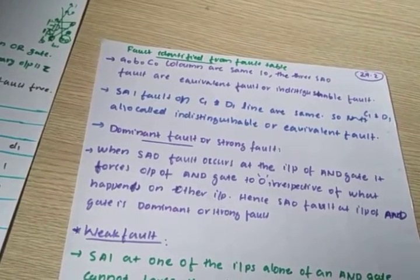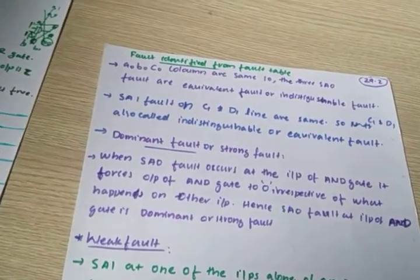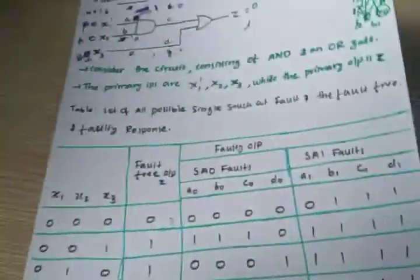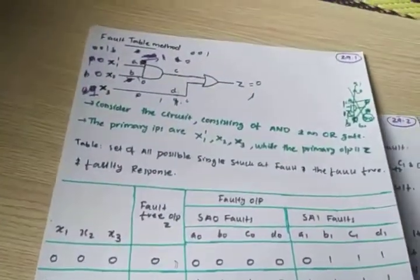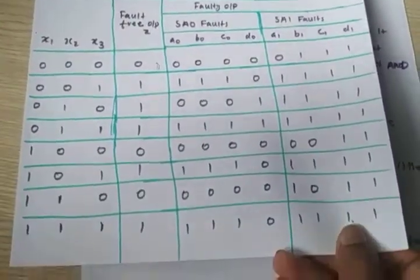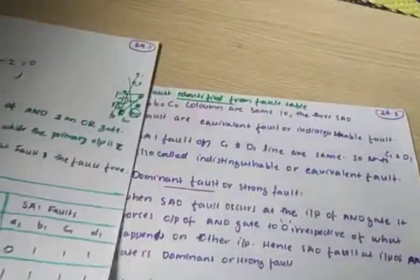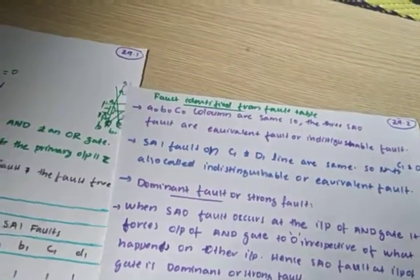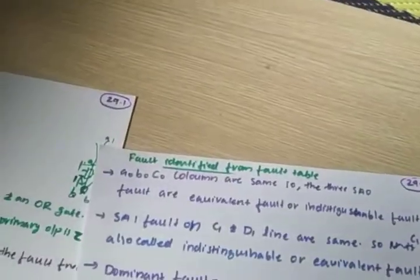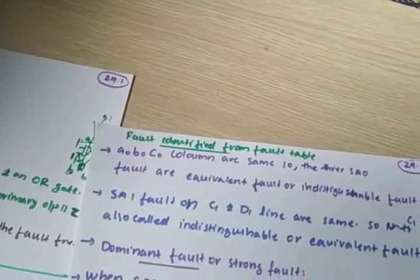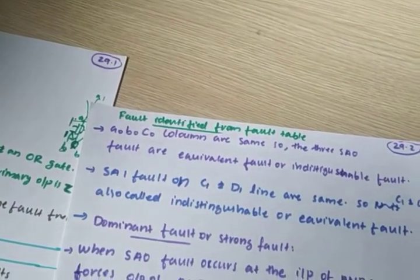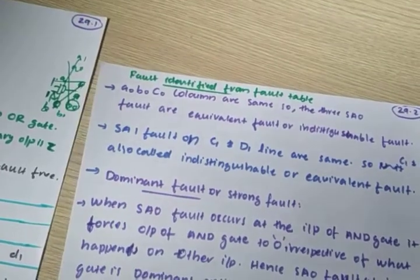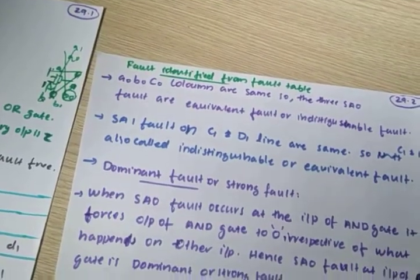Next is fault identification. Fault is identified from the fault table. In the previous lecture we discussed about this fault table. From this fault table we need to find out the fault identified — what are the different types of fault which we can identify from the fault table.